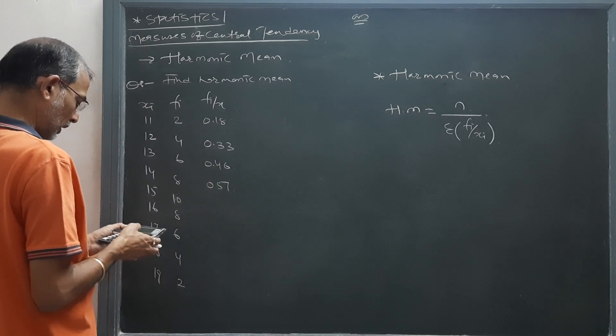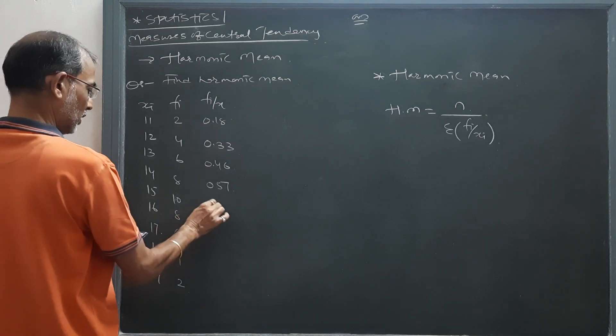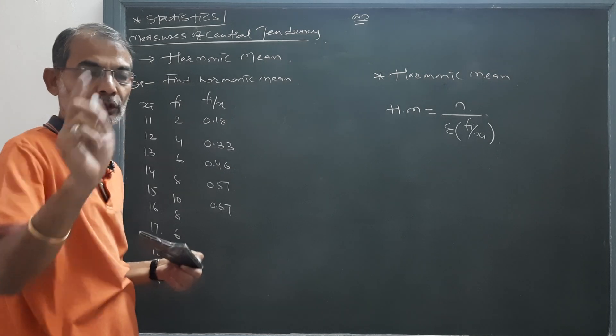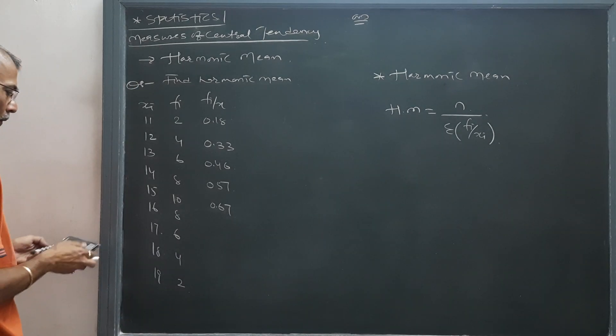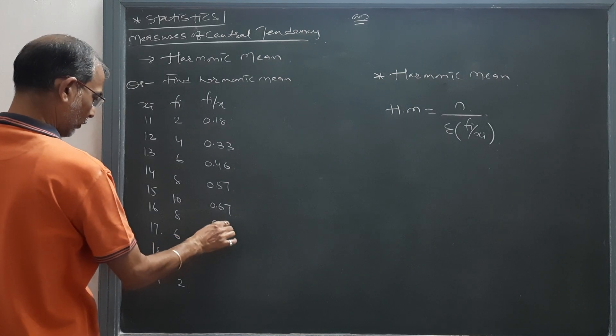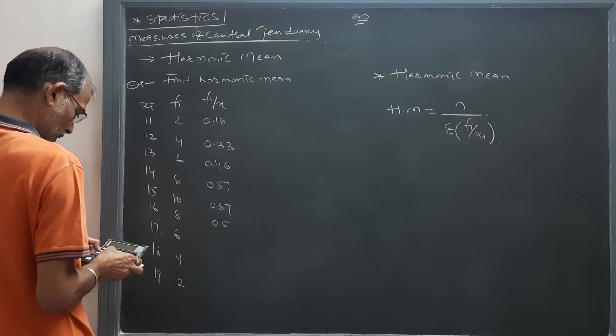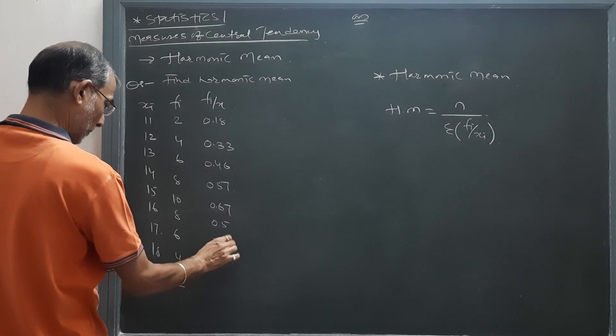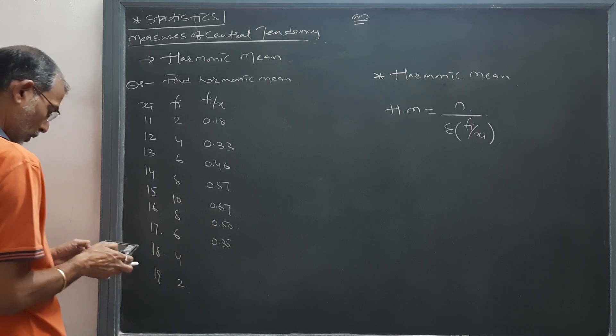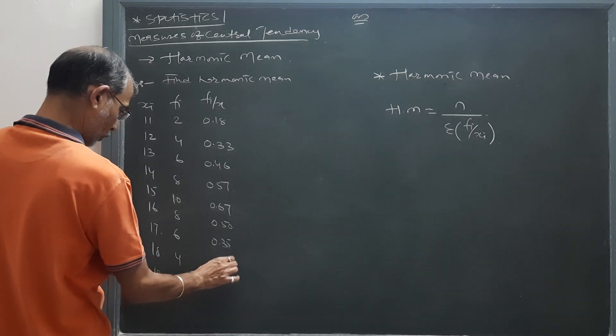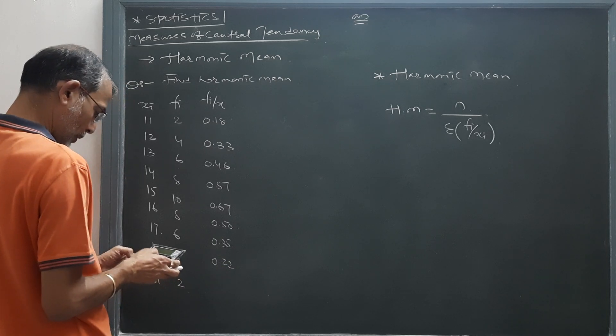fi/xi is to be done. 8 divided by 16, that means 0.5. 6 divided by 17 will be 0.35. 4 divided by 18 will be 0.22, and 2 divided by 19 will be 0.11.